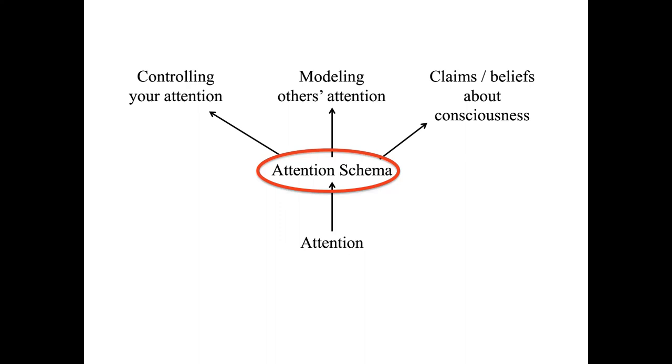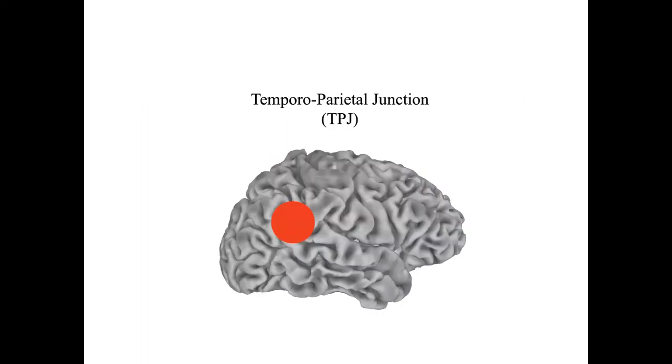A structure like that should combine the following properties. It should be involved in building predictive models of your own attention, in controlling your own attention, in attributing conscious mind states to other people, and in reports of conscious experience. And it turns out, the temporoparietal junction, or TPJ, may satisfy these conditions.